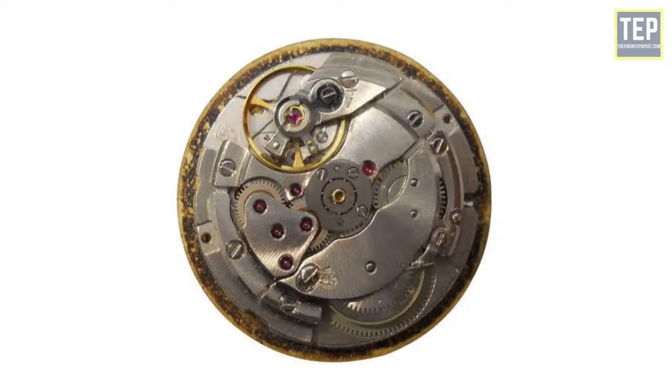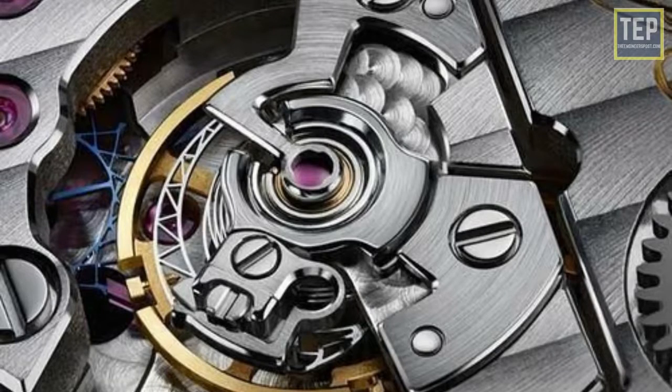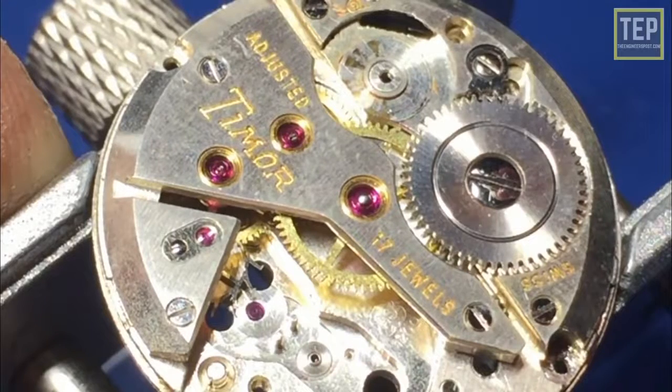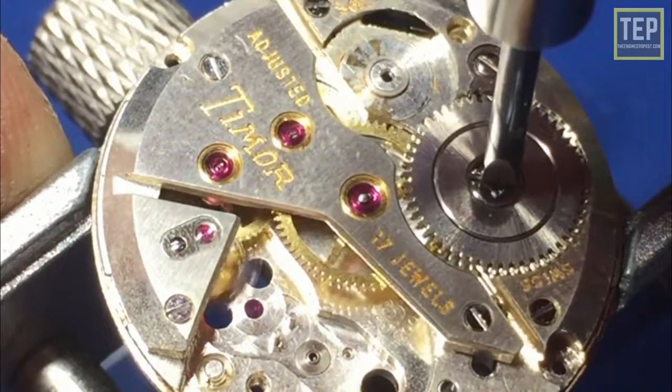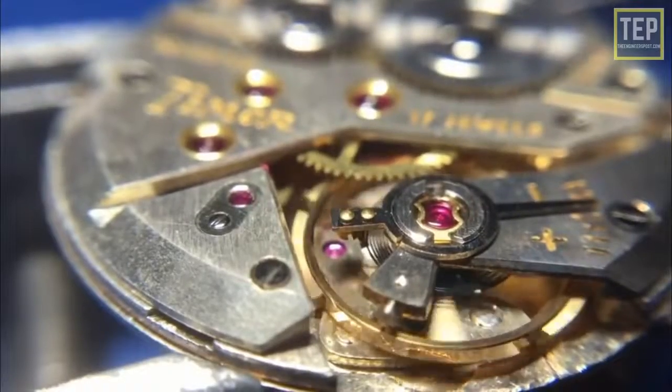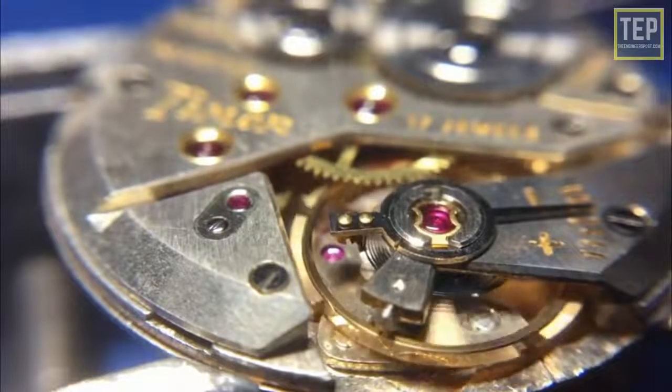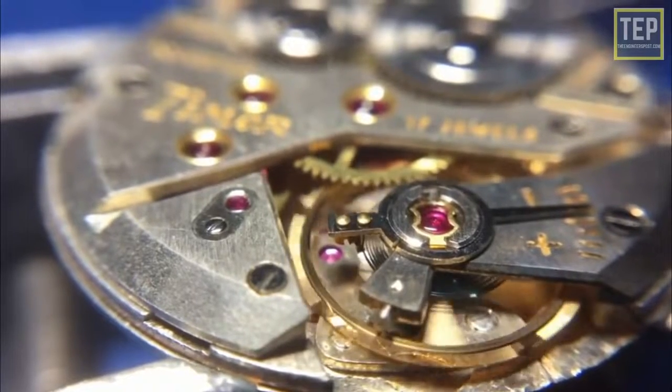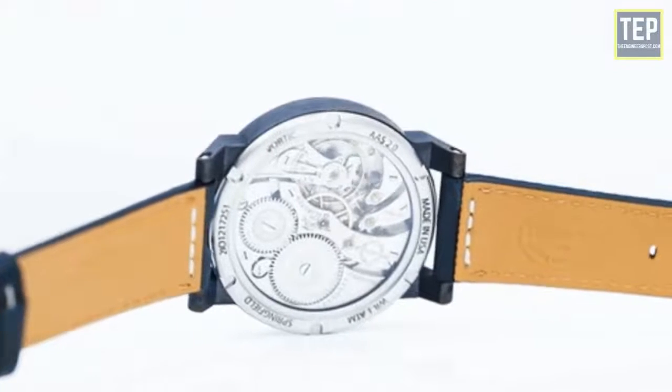A jewel bearing is a plain bearing in which a metal spindle turns in a jewel-lined pivot hole. The hole is typically shaped like a torus and is slightly larger than the shaft diameter. The jewels are typically made from the mineral corundum, usually either synthetic sapphire or synthetic ruby. The jewel bearings are used in a range of industry applications and in precision instruments where low friction, long life, and dimensional accuracy are important. Their largest use is in mechanical watches.